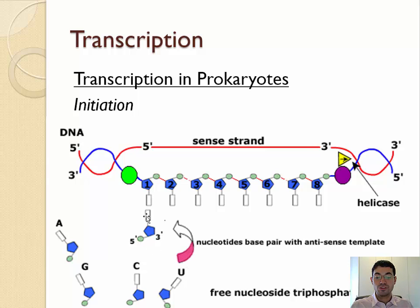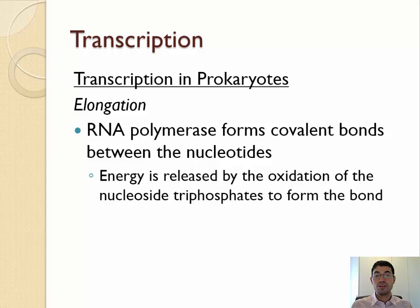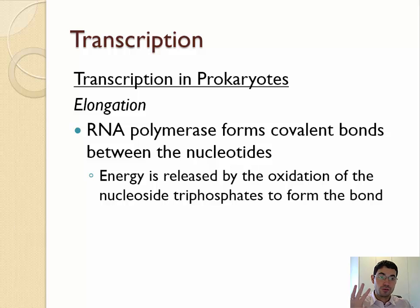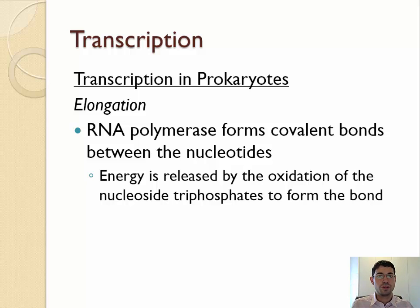In elongation, we're going to see RNA polymerase add nucleotides to the 3' end of the mRNA molecule. During elongation, RNA polymerase is forming covalent phosphodiester bonds between the nucleotides. Just like in DNA replication, it's actually getting energy from this because technically it's adding nucleoside triphosphates, which have a third phosphate group — just like ATP — and breaking it off provides the energy. That said, thinking of elongation as RNA polymerase adding RNA nucleotides together in the 5' to 3' direction by complementary base pairing on the antisense strand is good enough.